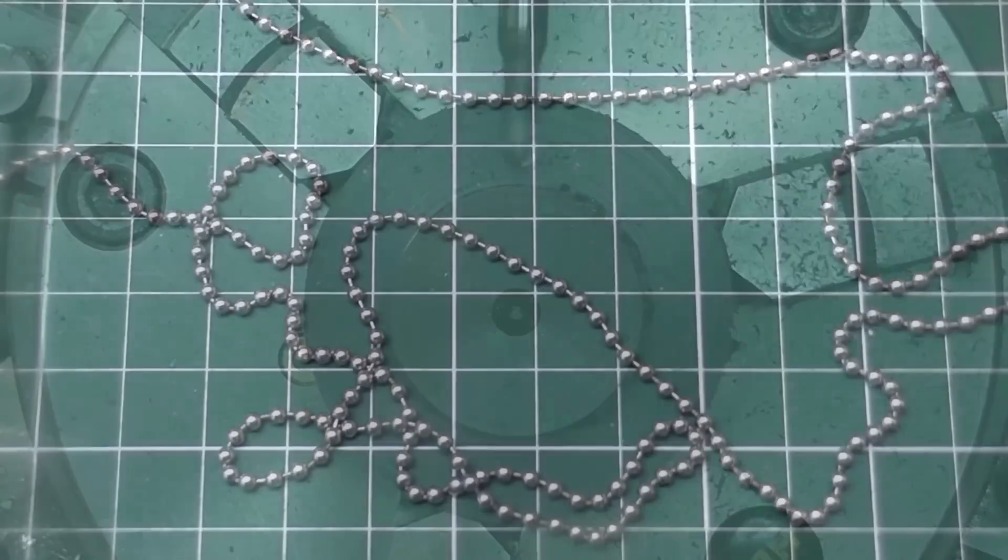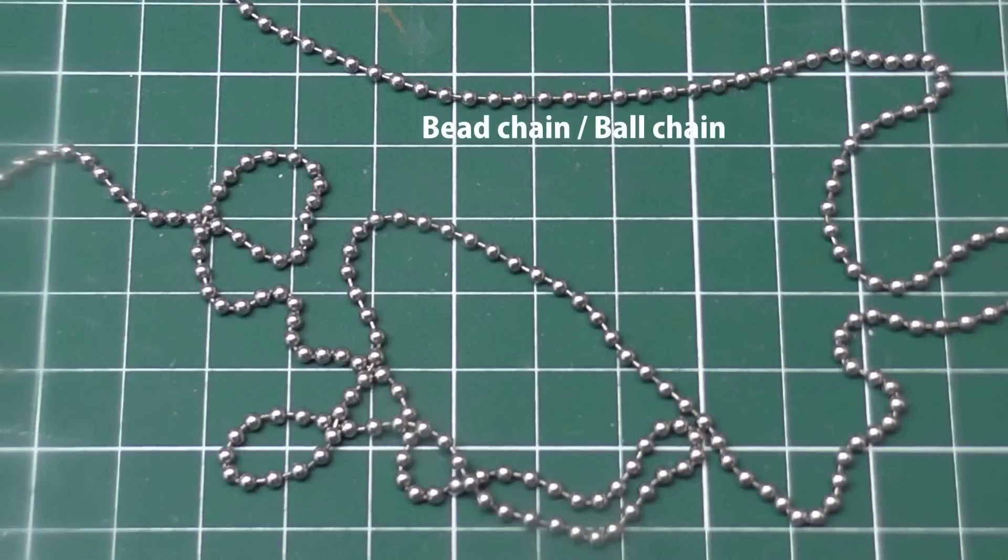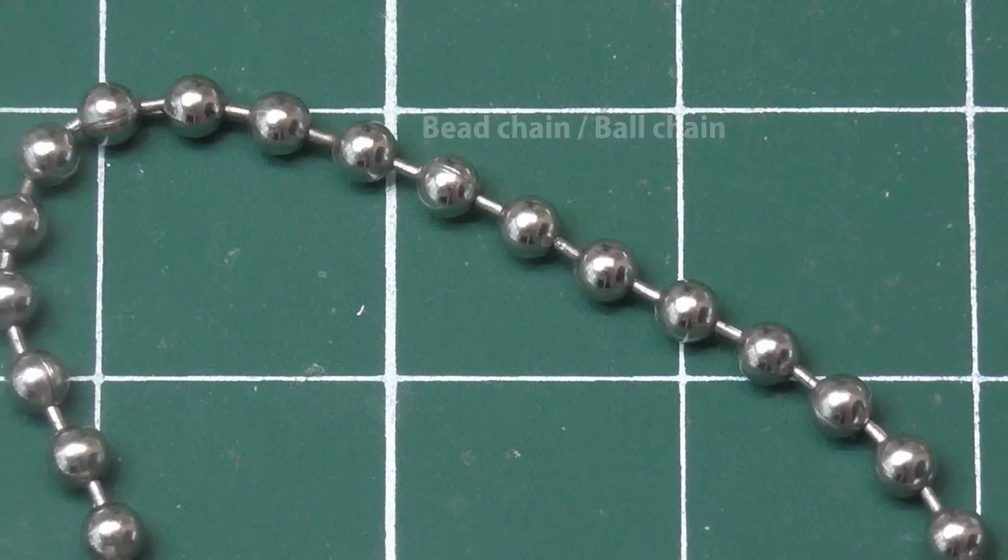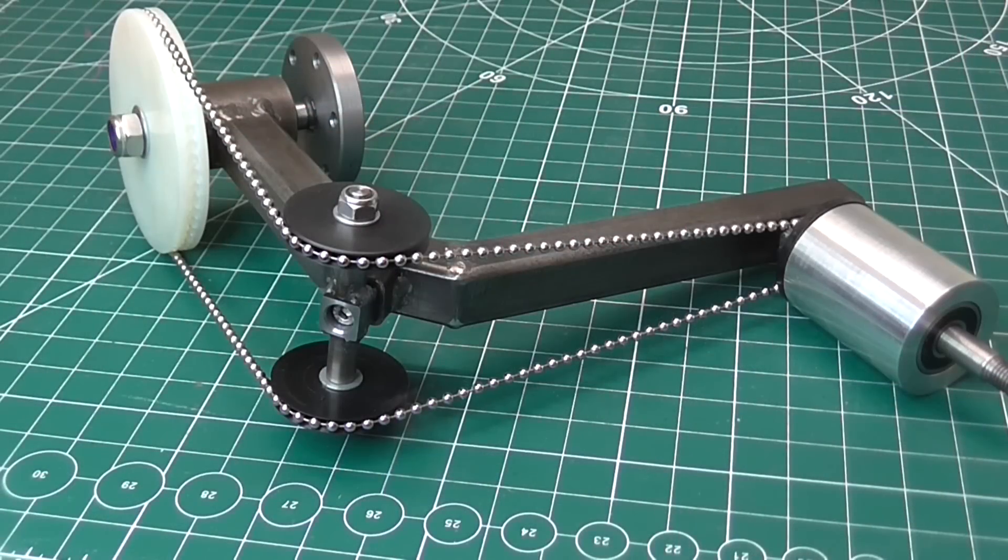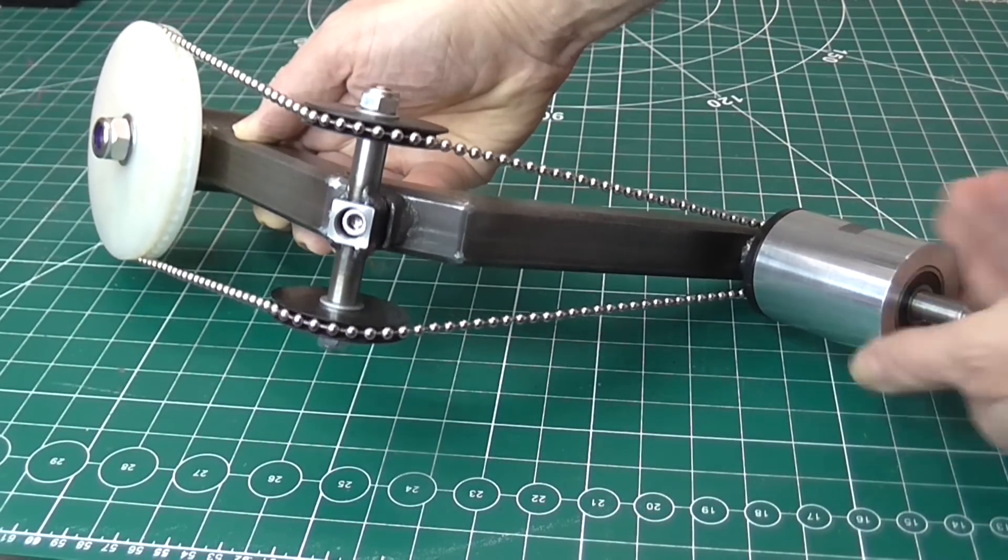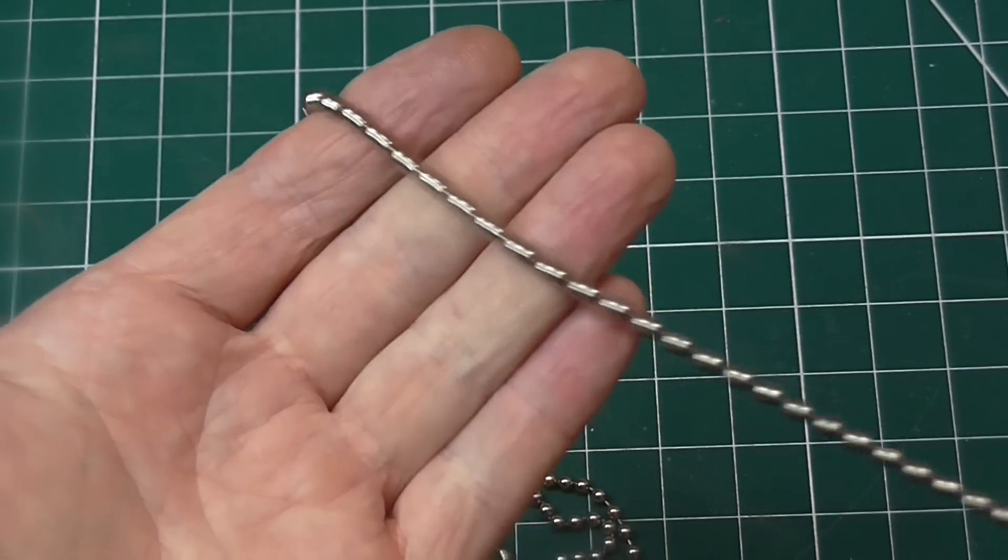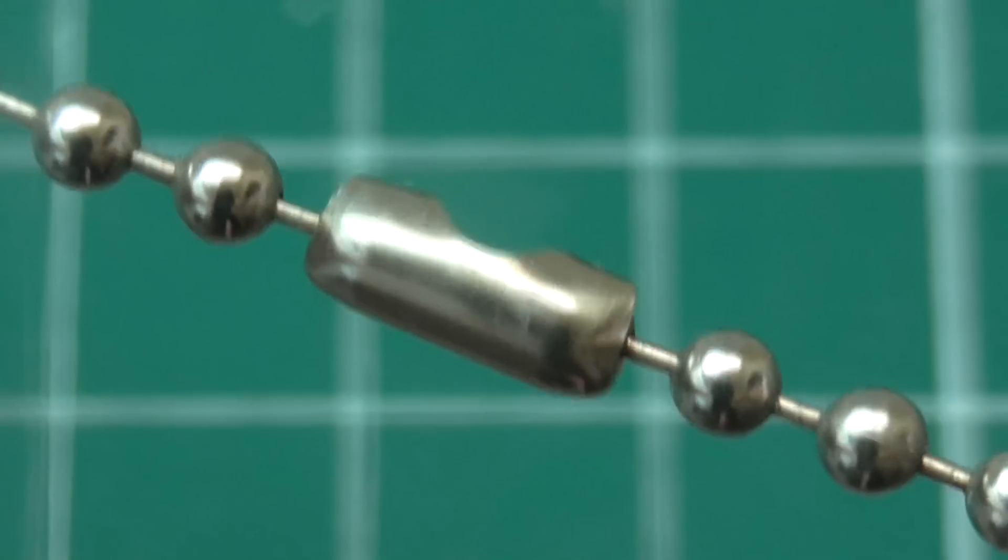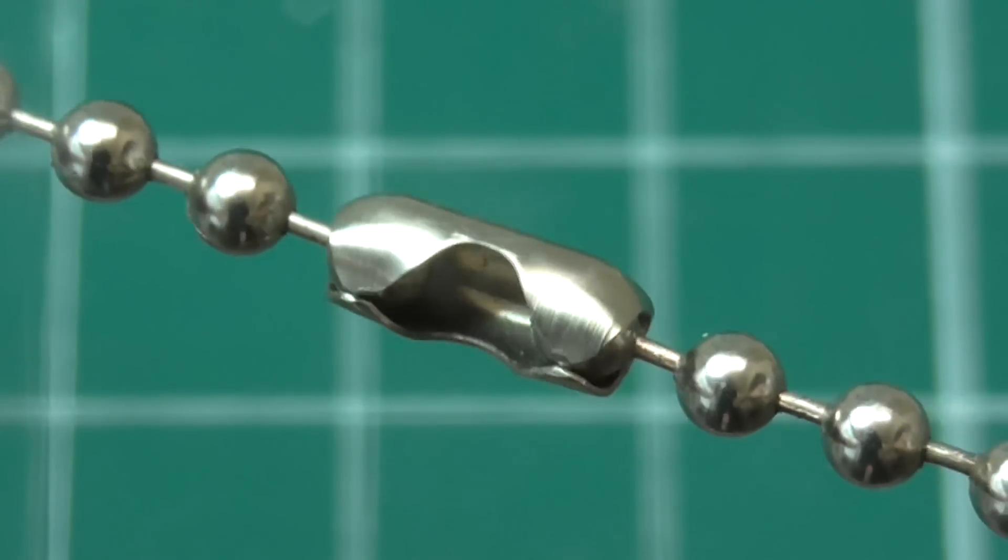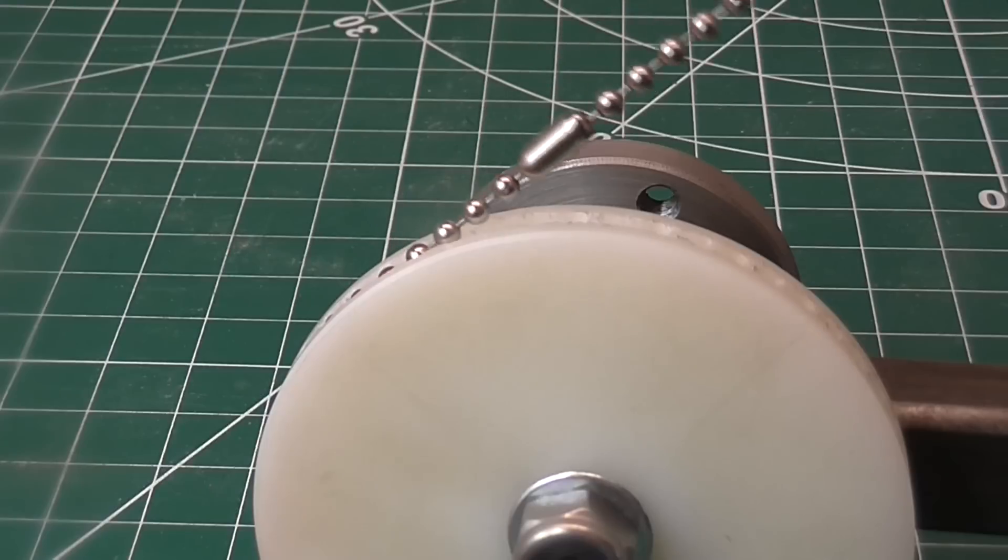The pulleys are designed to use bead chain to simplify transmitting the drive through 90 degrees. I need to make a loop of chain the right size, however the normal method of joining the chain using one of these connector links won't work, since the connector won't go around the pulleys.